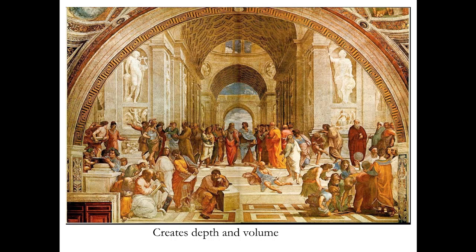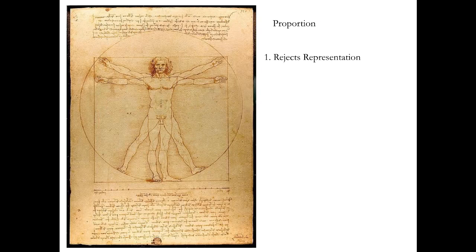What this does is make paintings look like sight. For the first time, the paintings are really looking like how you would see them — they look like reality. Which brings us to proportion. We can make something have depth and three dimensions, but that doesn't matter if all the sizes are wrong. That's not reality. Remember our 40-foot-tall king over a wall? There's no proportion there. How big are those walls? You don't know, and the artist doesn't care — he's telling you this king is powerful. Proportion rejects that representation.